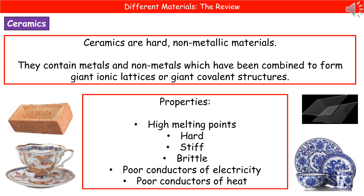When we consider the properties of our ceramics, they are hard non-metallic materials. They are going to contain metals and non-metals which have been combined together to form giant ionic lattices or giant covalent structures, depending on what they're made from.